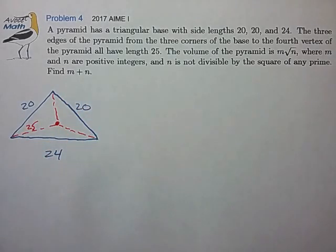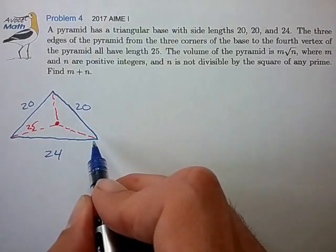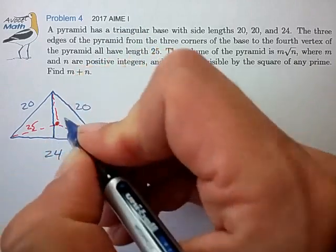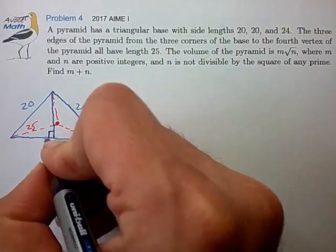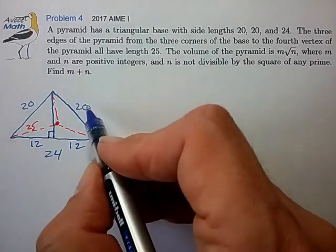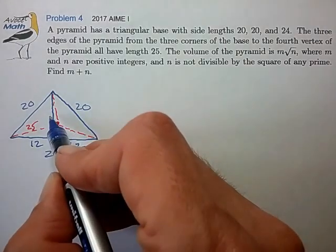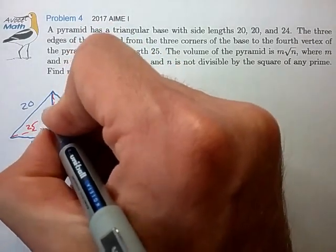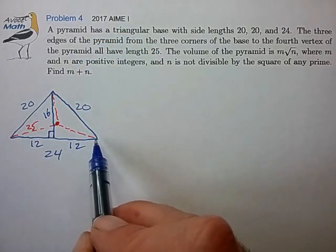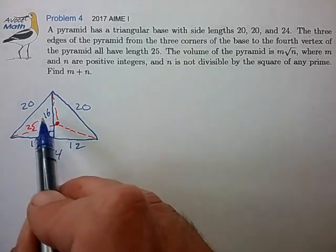Great. Now it looks like the base is a nice friendly isosceles triangle, so let's cut that into two pieces. This is length 12, this is length 12. This looks like a 5-3-4 right triangle, so this length 16. So the area of the base is pretty easy to calculate. The area of the base is just 12 times 16.